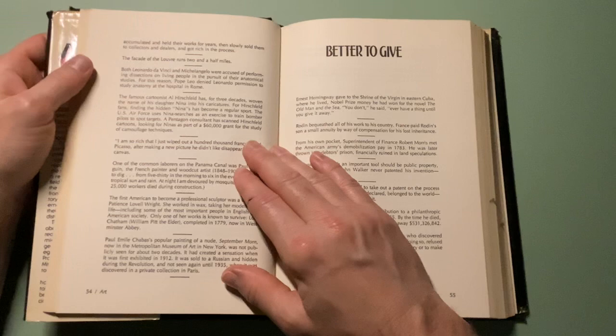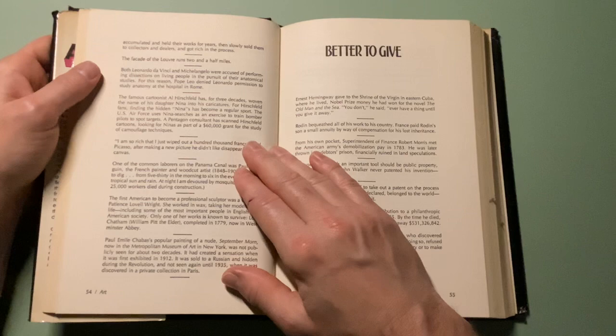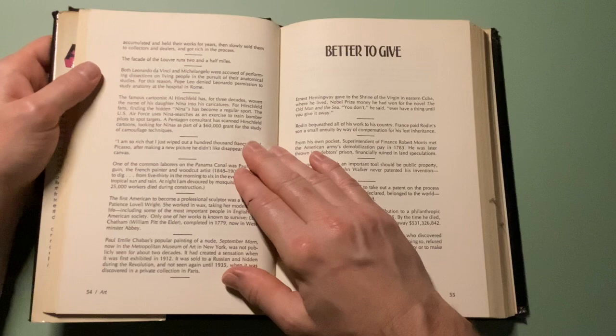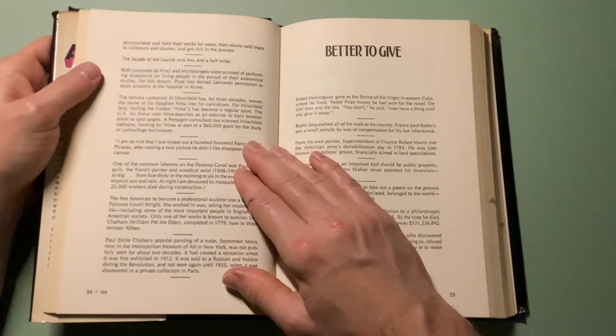Both Leonardo da Vinci and Michelangelo were accused of performing dissections on living people in the furtherance of their anatomical studies. For this reason, Pope Leo denied Leonardo permission to study anatomy at the hospital in Rome.